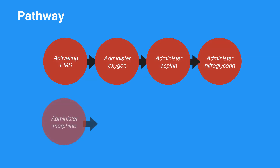Administer morphine: give 1–5 mg intravenously only if symptoms are not relieved by nitrates, or if symptoms recur. Monitor blood pressure closely.